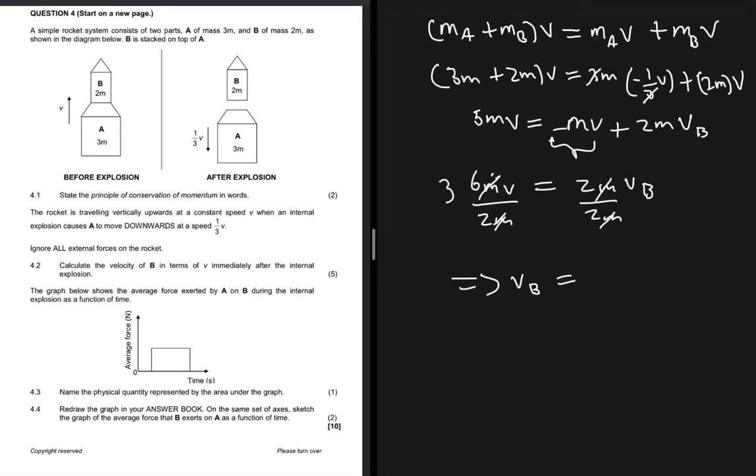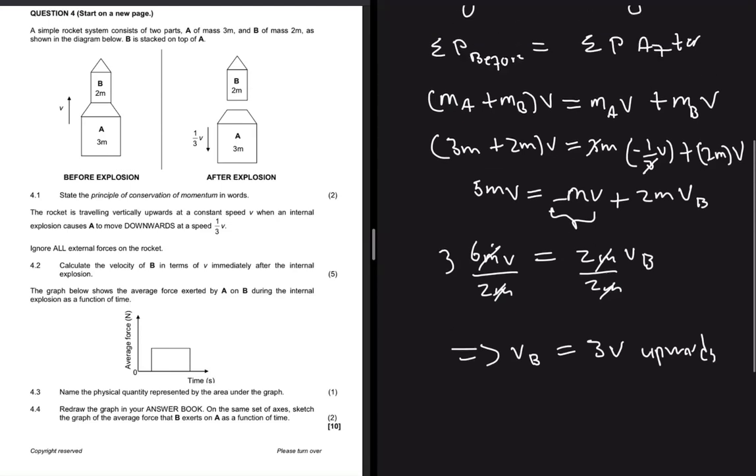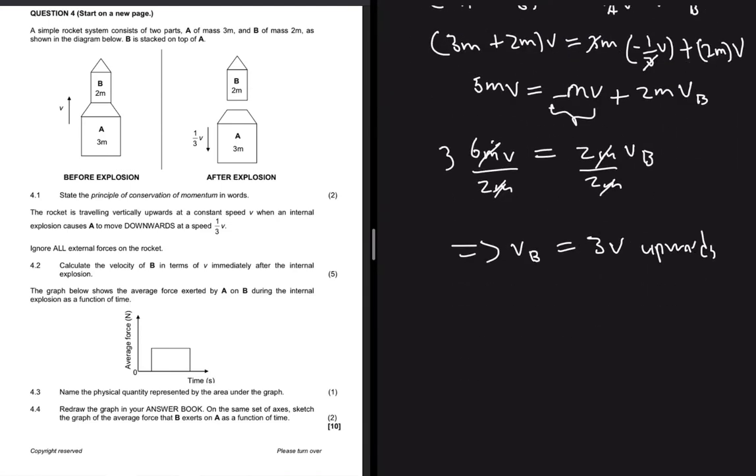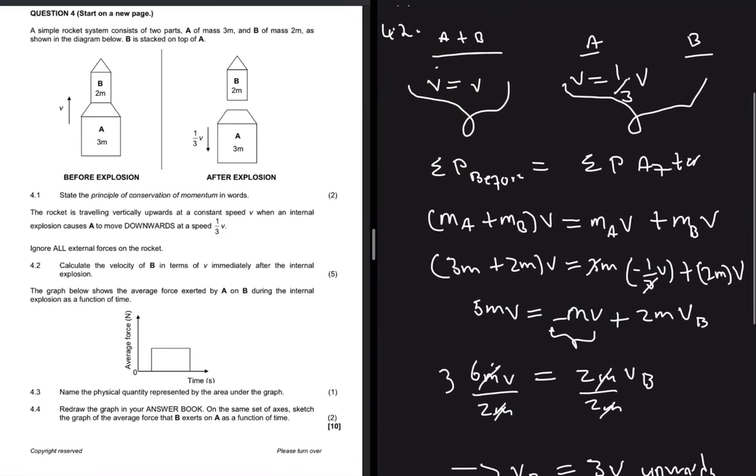This implies that the velocity of body B equals 3v. The question says we must find it in terms of v, so it's 3v upwards because we're taking up as positive.